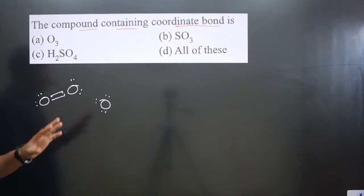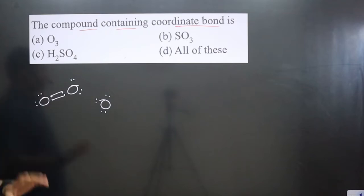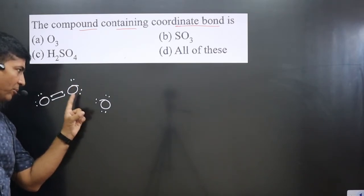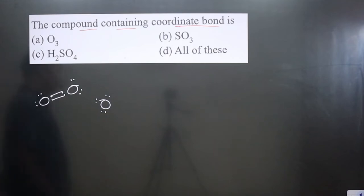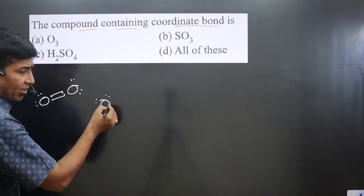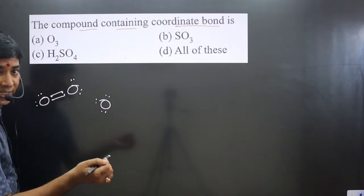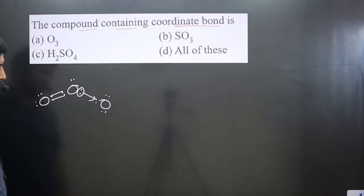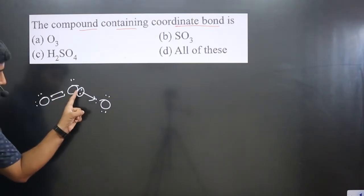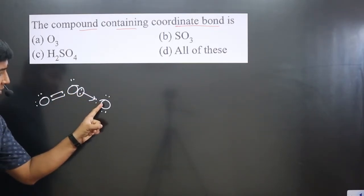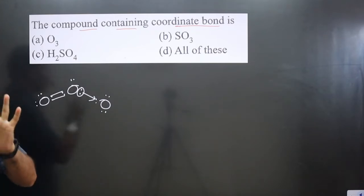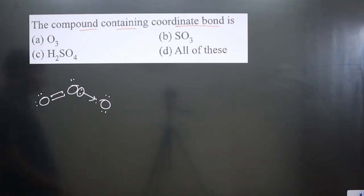Two covalent bonds are formed and valence is satisfied, but oxygen does not form four bonds — it forms in general two bonds. It has six valence electrons and needs two more to complete its octet. So this oxygen will donate both electrons to another atom — coordinate bond formation is taking place.